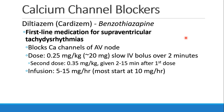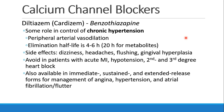Usually we give it as a slow IV bolus over about two minutes. If a second dose is needed, it would be 0.35 milligrams per kilogram, which you can redose 2 to 15 minutes after the first dose. You can also run a diltiazem infusion at a rate of 5 to 15 milligrams per hour; most people start at 10 milligrams per hour. Diltiazem may also have some role in chronic hypertension and can be taken orally as well as IV.